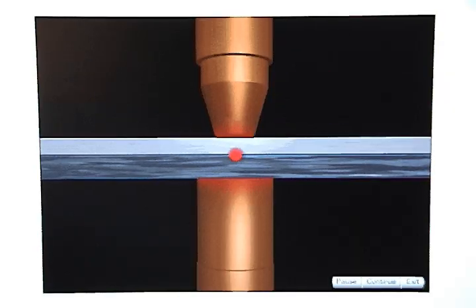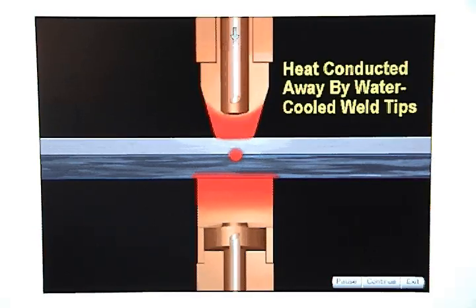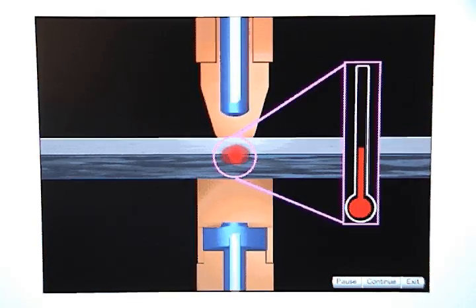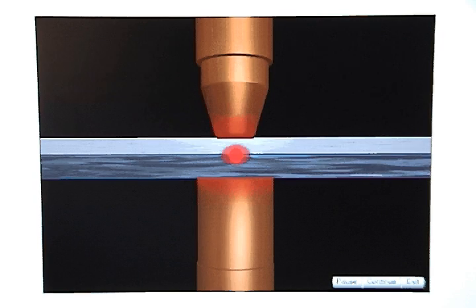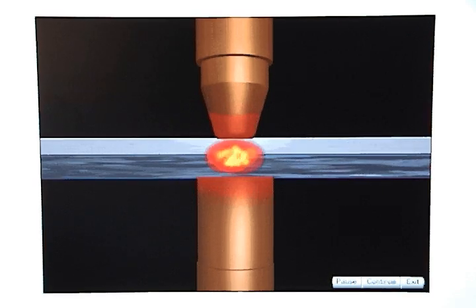The heat at the weld tip interface is conducted away by the water-cooled weld tips while the part interface continues to get hotter. About halfway through the weld time, the metal at the part interface begins to melt.